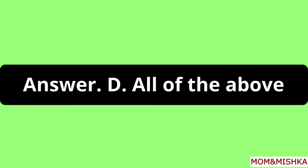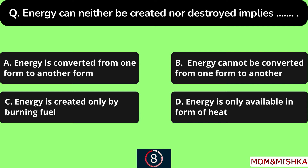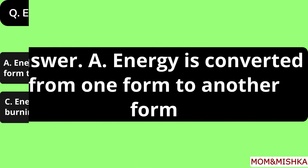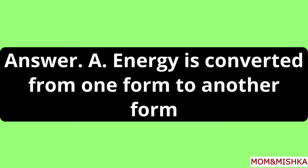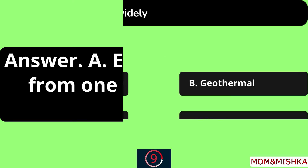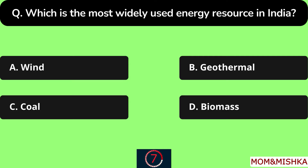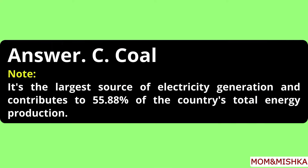The answer is all of the above, option D. Energy can neither be created nor destroyed — this implies that energy is converted from one form to another form, option A. Which is the most widely used energy resource in India? Coal, option C.